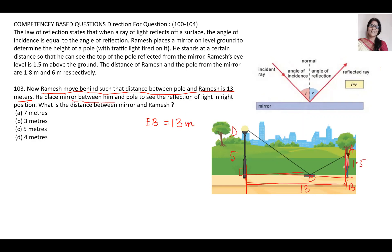He places mirror between him and pole to see the reflection of light position. What is the distance between mirror and Ramesh? BC distance. So let it be X. Let BC distance be X. Then CE will be 13 minus X.